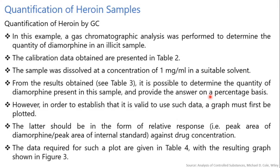For quantification of heroin by GC: in this example, a gas chromatographic analysis was performed to determine the quantity of diamorphine in an illicit sample. The calibration data obtained are presented in Table 2. The sample was dissolved at a concentration of 1 mg per ml in a suitable solvent. From the results obtained in Table 3, it is possible to determine the quantity of diamorphine present in the sample and provide the answer on a percentage basis. However, to validate the data, a graph must first be plotted.